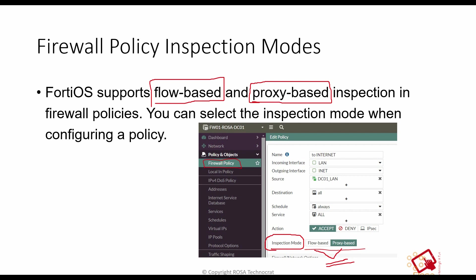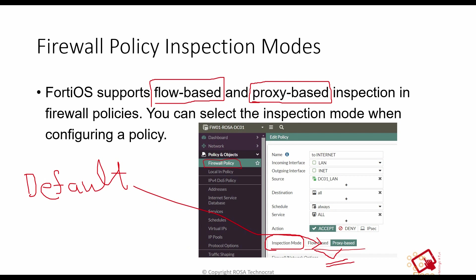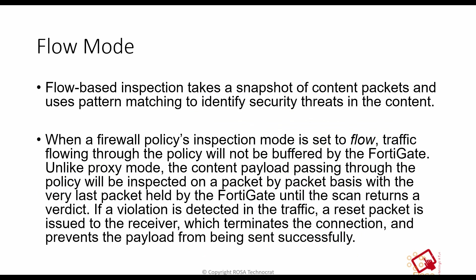The default mode of a policy is flow-based. Here it is showing proxy-based because I have changed it to proxy. Now, what is the difference between flow-based inspection and proxy-based inspection? How should you decide which mode to go for? The default mode is flow mode on FortiGate firewalls. Before understanding the factors, let's understand the difference between them.